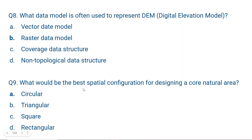Question number 9. What would be the best spatial configuration for designing a core natural area? A circular, B triangular, C square, D rectangular. The correct answer is A, circular. The core natural area means the core area of a bioreserve or national park — the central protected area. When representing the core natural area on a map, a circular configuration is best because it minimizes the edge-to-area ratio, providing better protection.